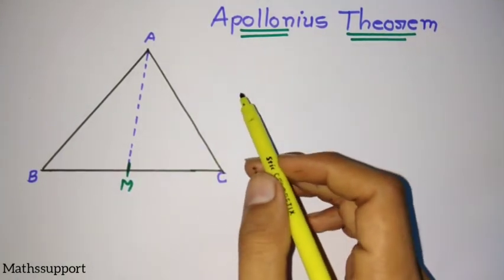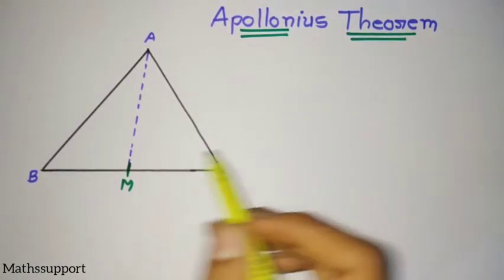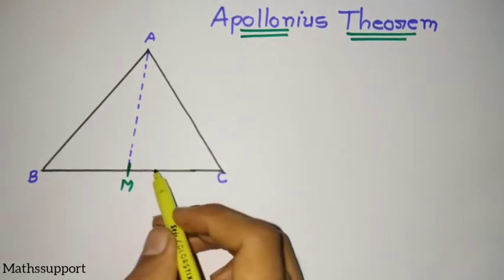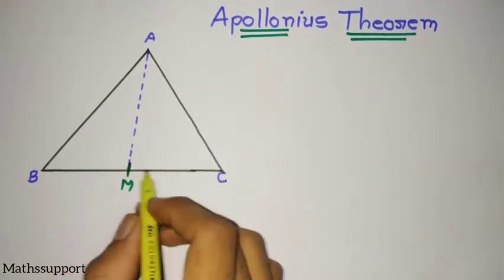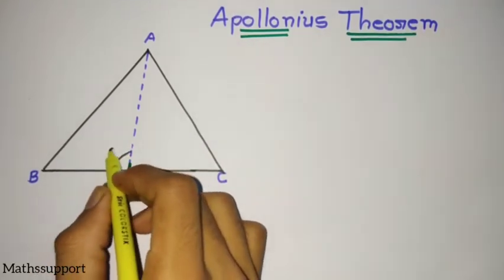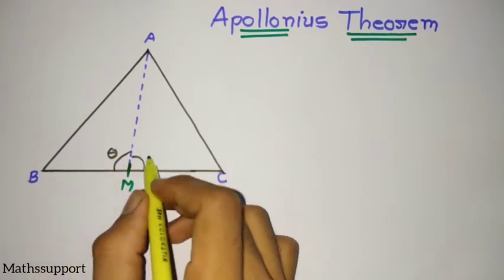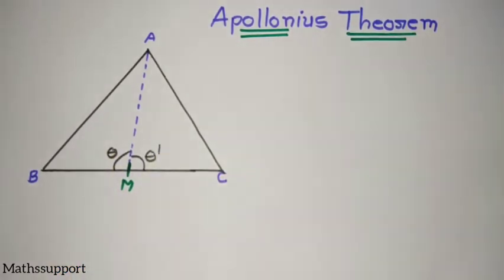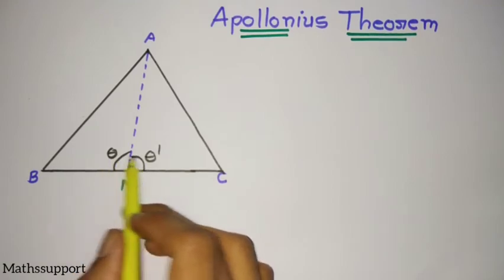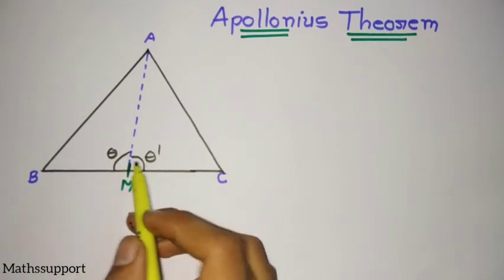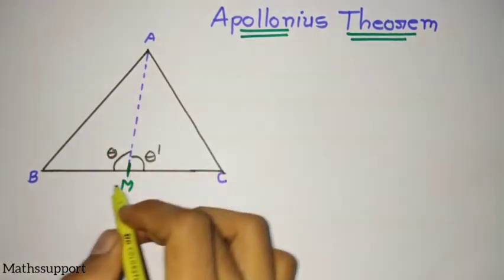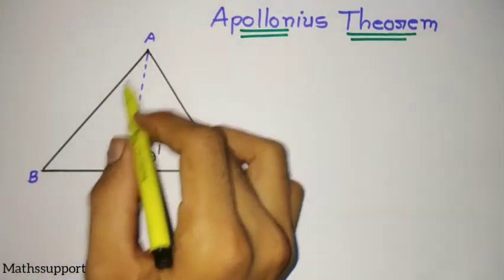What we are doing here is very simple. This is a straight line. If I assume this is theta and this is theta dash, these two angles will be supplementary angles. For this triangle AMB, if I use the cosine formula...